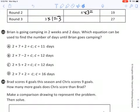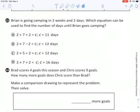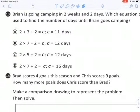Number thirteen, Brian is going camping in two weeks and two days. Which equation can be used to find the number of days until Brian goes camping? So just choose the equation there. There's only one right answer. It's either A, B, C, or D.